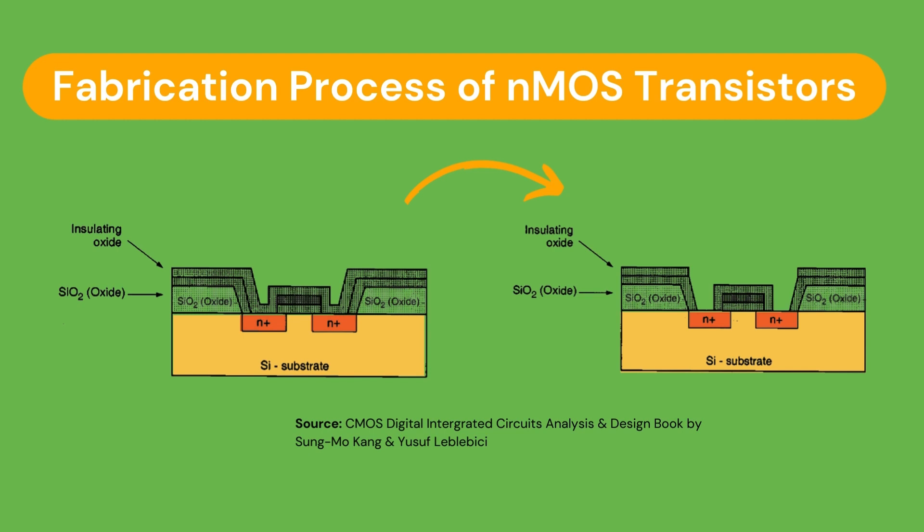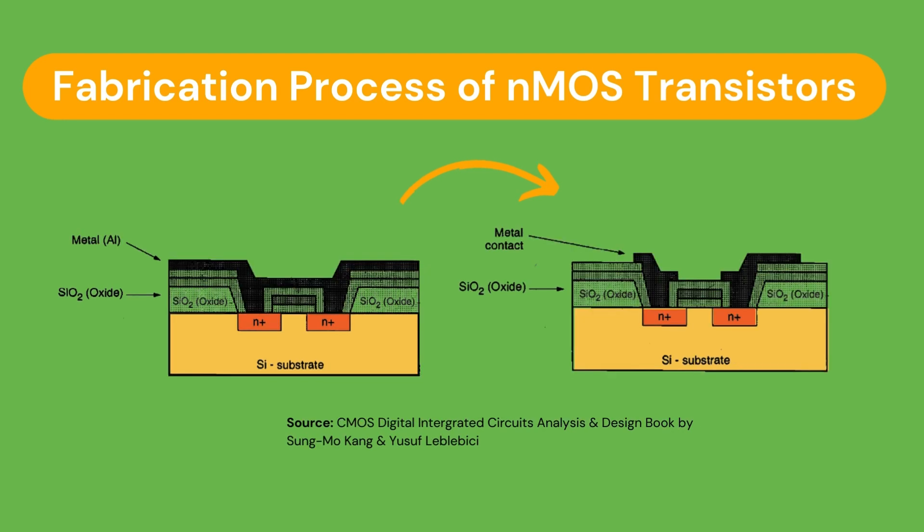This layer is also patterned in order to provide contact windows for the source and drain. The surface is then covered with evaporated aluminium, which will form the interconnects. And finally, this metal layer is also patterned and etched, completing the interconnections of the MOS transistor.